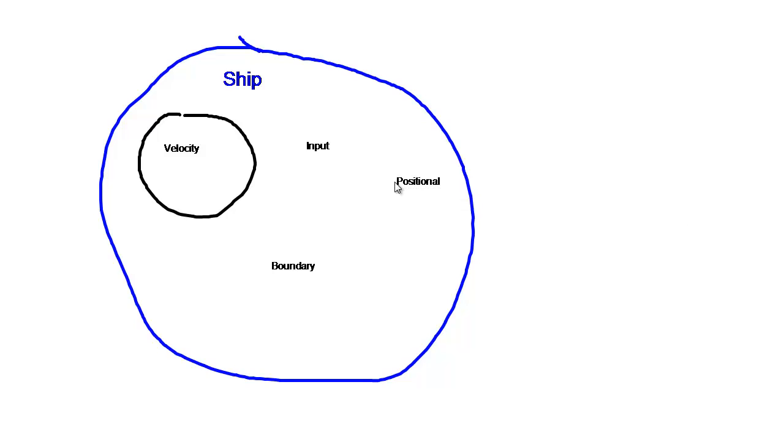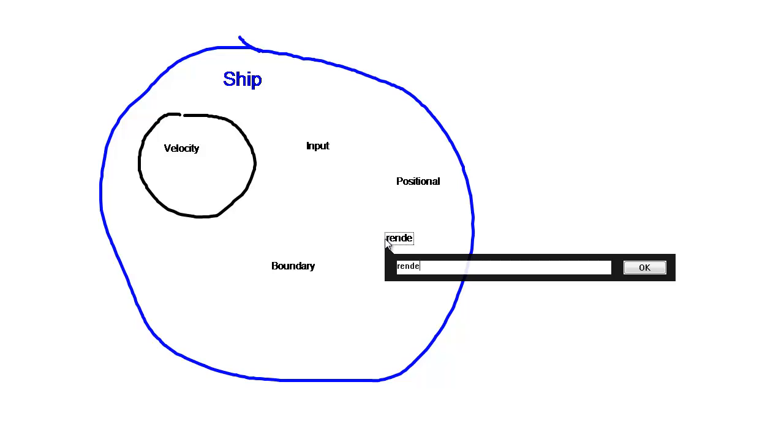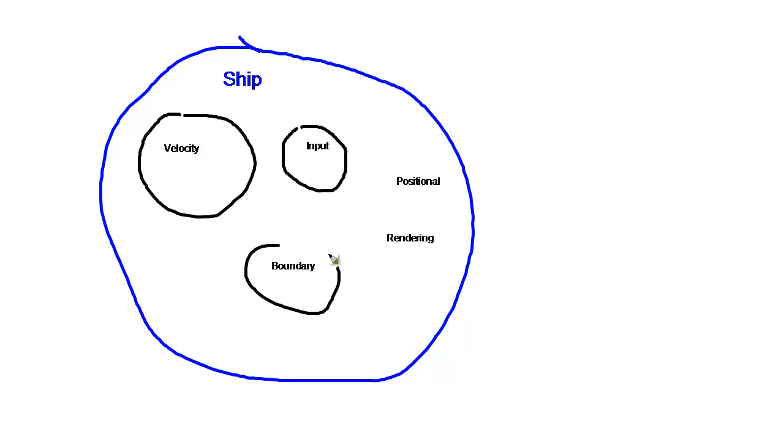We had the thing that's going to handle the boundary conditions, and we also had positional information and then the thing that's going to handle the rendering of our ship. And so, if we built this ship as a class, it would be a pretty beefy class with all this functionality in there. But instead, we're going for a component slash entity design pattern instead.